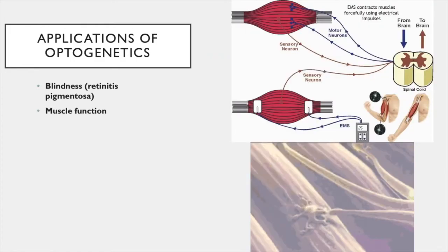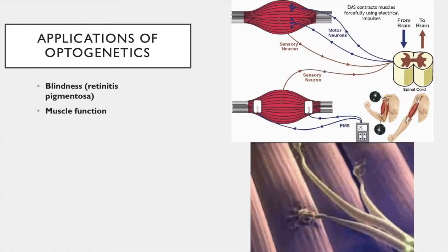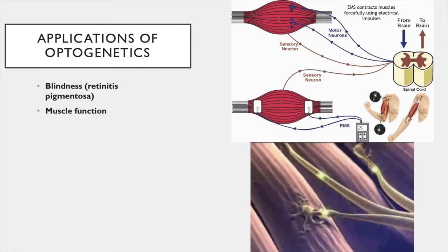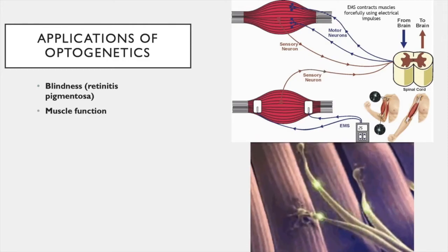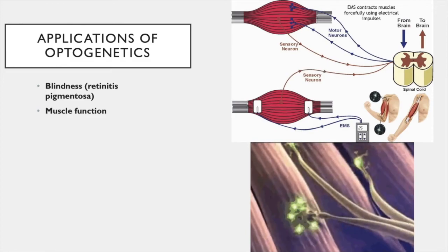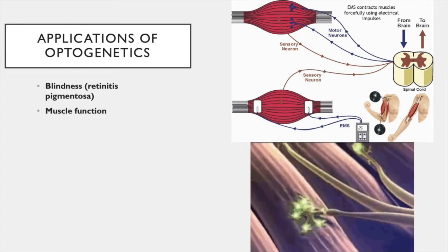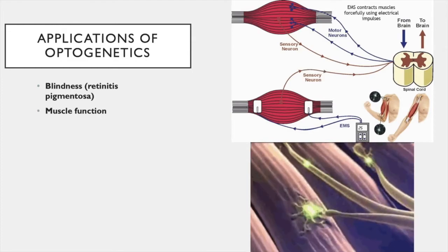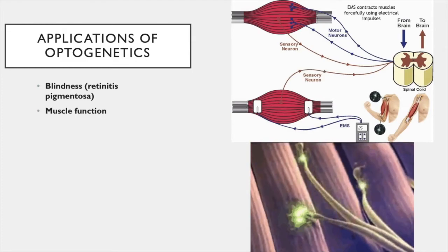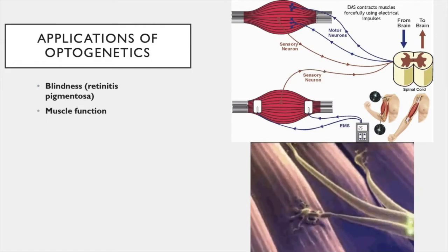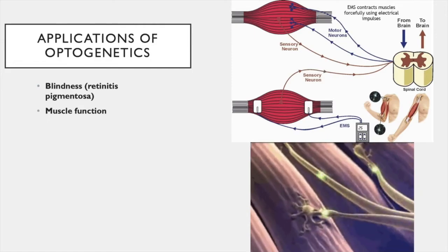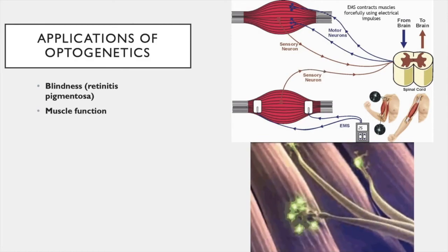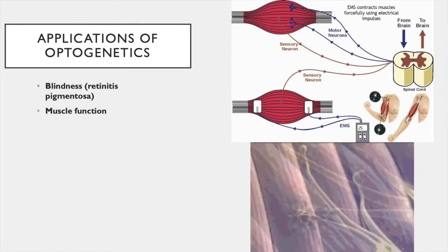Optogenetics can also be used for the treatment of diseases that cause muscular weakness. Normally, signals from your brain travel down to motor neurons in your spine whose nerve terminals innervate your muscles. When these cells are activated, it stimulates muscle contraction. Current treatments of muscular atrophy involve electrical stimulation of these neurons, but this could also be achieved with optogenetics. Stimulation of channelrhodopsin-expressing motor neurons using skin-penetrant LED lights can achieve the same effect.